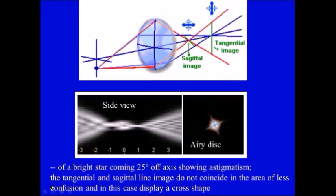This is an example of a bright star coming 25 degrees off the axis. So instead of being along the main axis it's 25 degrees off the axis. And this is the ray configuration here.